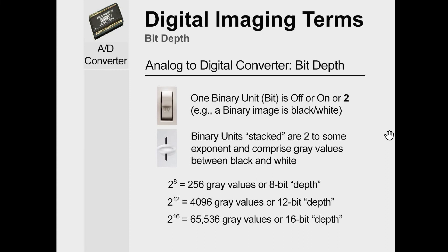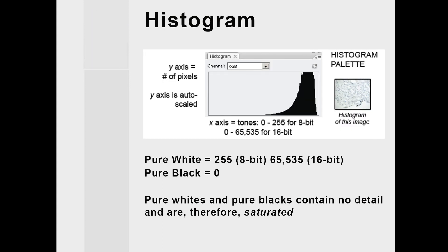256 includes 0, so in an image it's 0 to 255. 2 to the 12th would be 4,096 gray values; 2 to the 16th would be 65,536 gray values. Bit depths describe how many tonal levels an image has from black to white. In a histogram, the x-axis represents the tones — 0 to 255 for an 8-bit image, or 0 to 65,535 for a 16-bit image — and the y-axis is the number of pixels at any one of those positions. Pure white is 255 for 8-bit or 65,535 for 16-bit; in both instances, pure black is 0.